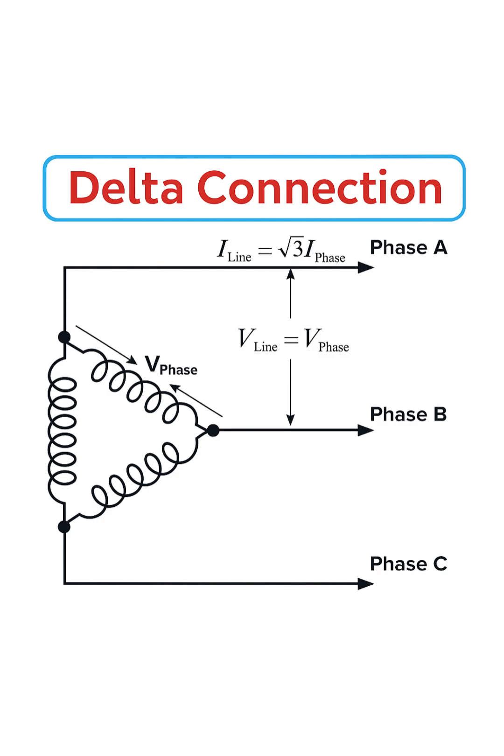In a delta connection, you can see that the lines are connected directly across the coils. This makes the relationship very simple: the line voltage is exactly equal to the phase voltage.